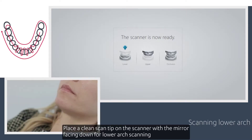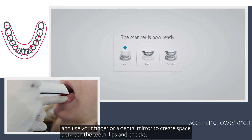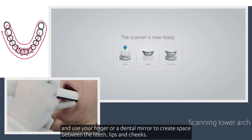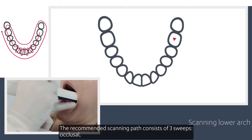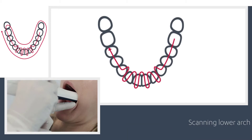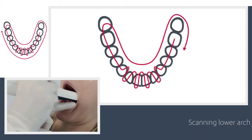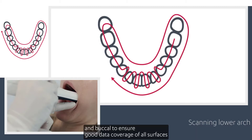Place a clean scan tip on the scanner with the mirror facing down for lower arch scanning, and use your finger or a dental mirror to create space between the teeth, lips and cheeks. The recommended scanning path consists of three sweeps — occlusal, lingual and buccal — to ensure good data coverage of all surfaces.